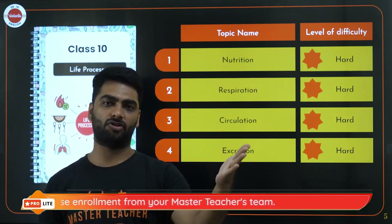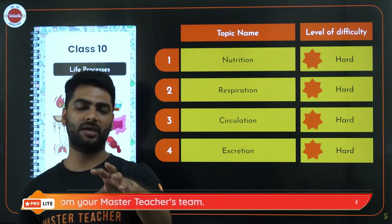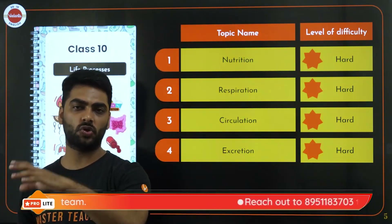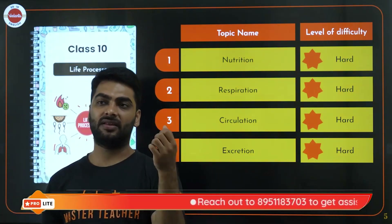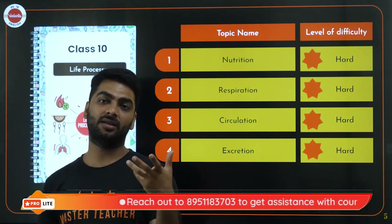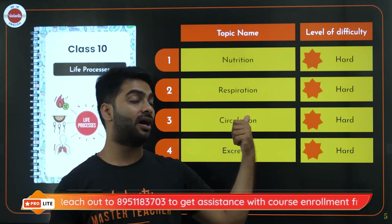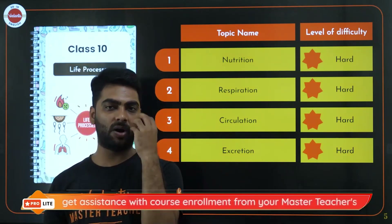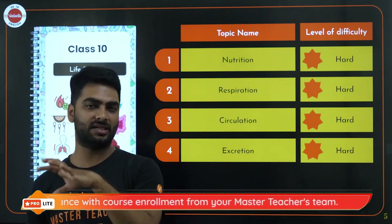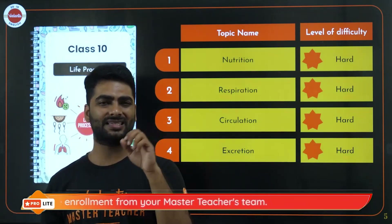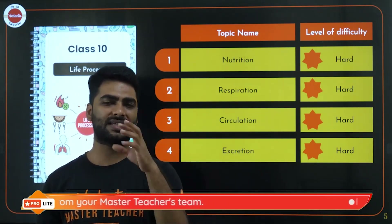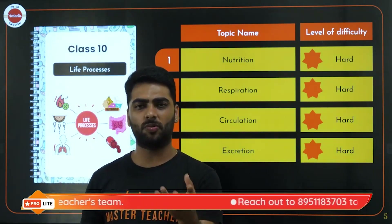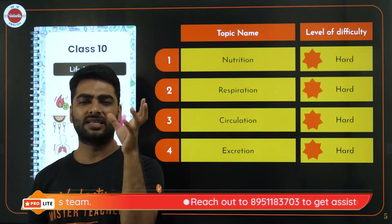Under nutrition we have autotrophic and heterotrophic. Under heterotrophic we have holozoic, parasitic, and saprotrophic. Humans and animals do holozoic; mushroom and yeast are saprotrophs; mosquitoes are parasitic. Under holozoic we learn about the entire digestive system — buccal cavity, teeth, dentition, salivary glands, esophagus, peristalsis, stomach, HCl, mucus, pepsin, small intestine, bile, pancreas, liver, gallbladder, villi, absorption, and assimilation.